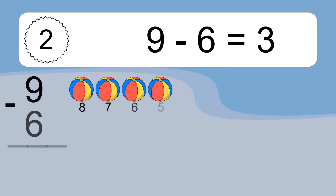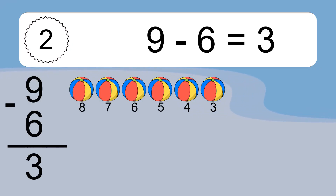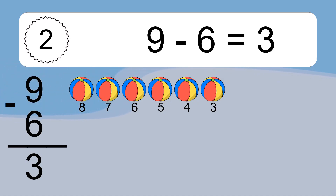9 minus 6 equals 3. Let's count it. 8, 7, 6, 5, 4, 3.